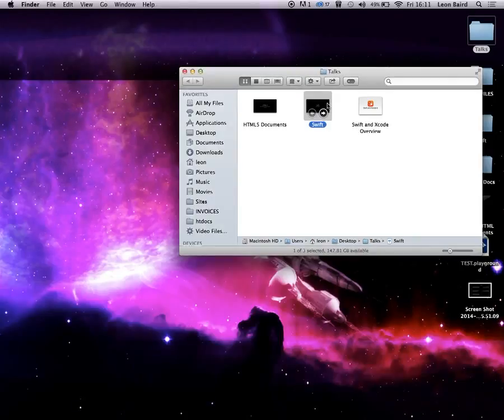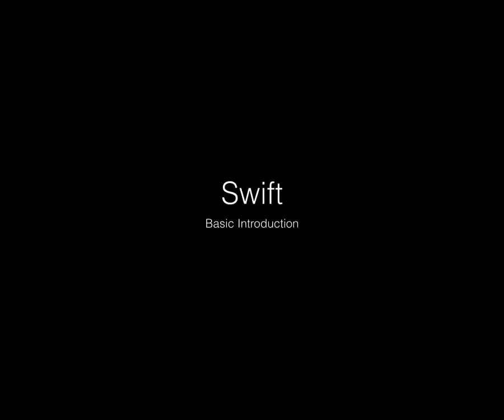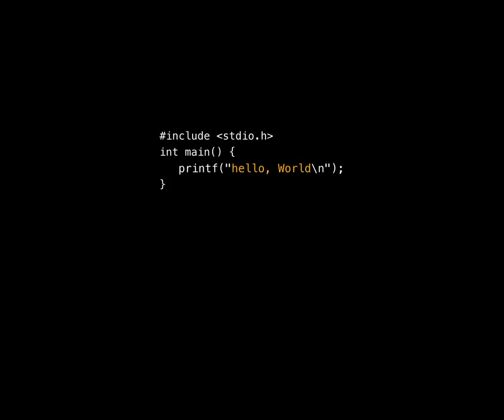Swift basically tries to take code you know and abstract it to be as minimal as possible — getting rid of everything you don't need, just keeping the nuts and bolts. It has even gotten rid, rather controversially, of semicolons at the end of lines. They're still there if you want to put multiple commands on one line, but they're optional — Swift uses the return key as a terminator to mark the end of lines.